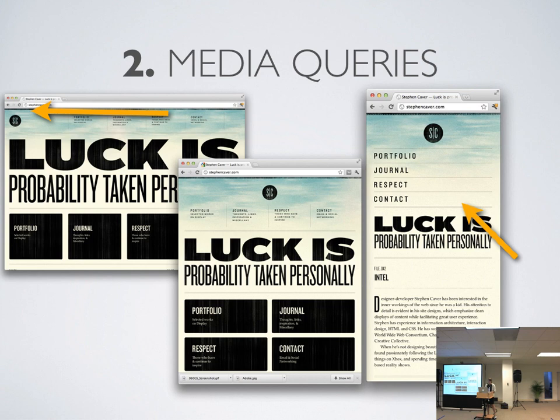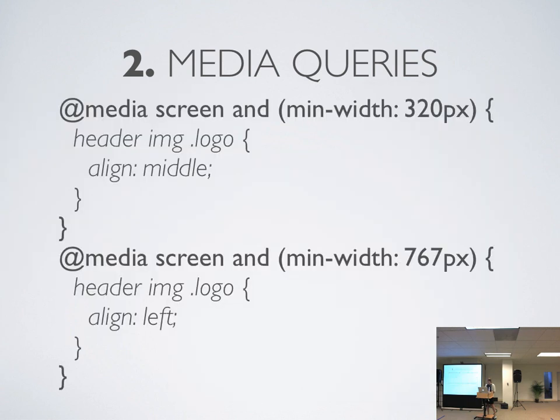Any CSS written in between those two curly brackets would apply when the screen is at least 480 pixels. As a quick example, this is Steven Carver's responsive personal website. He has a little SC logo in the top left corner on desktop. When he gets to tablet and mobile, he actually centers it — something he would have done in media queries. So @media screen, min-width 320 would be center-aligned for iPhone, and 767 and above for tablet would be left-aligned.